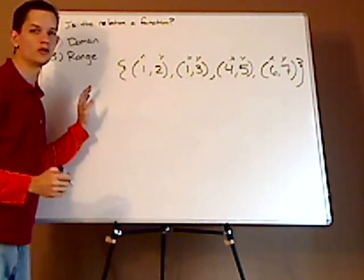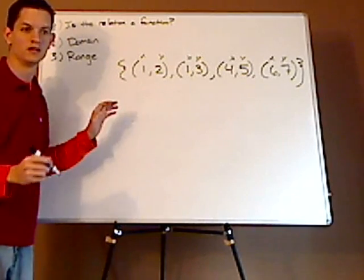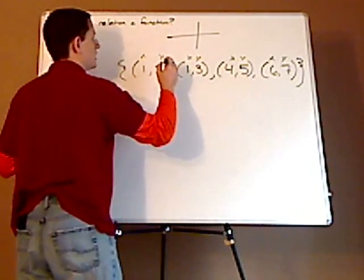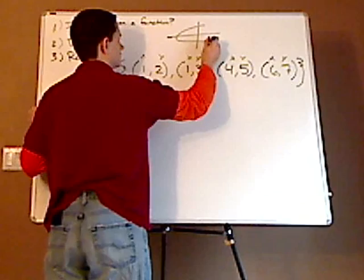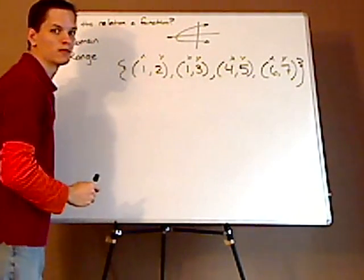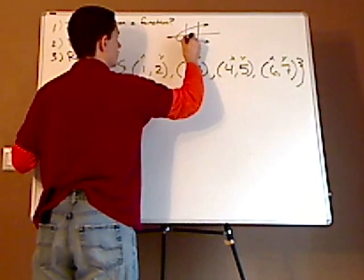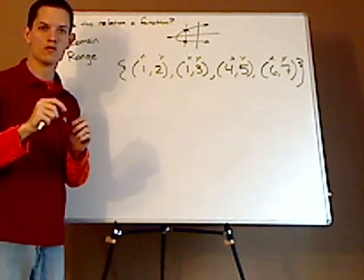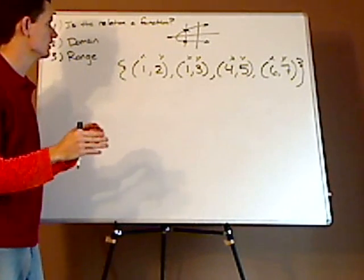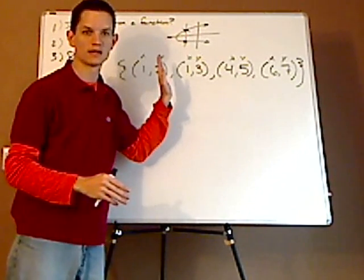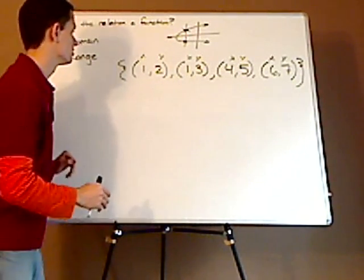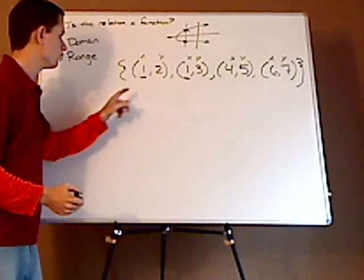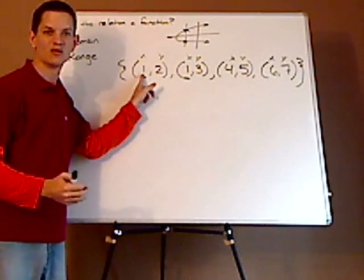Let me show you visually what happens to determine if it's a function or not. Visually speaking, if it fails the vertical line test — like this sideways parabola right here — if it intersects the vertical line more than once at any point, then it fails the vertical line test. So here it would fail, because for one X value, the Y is not unique.